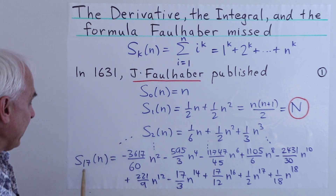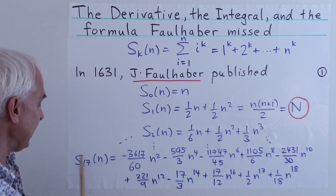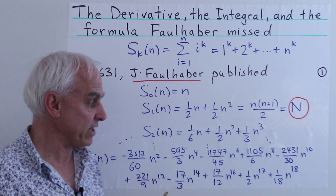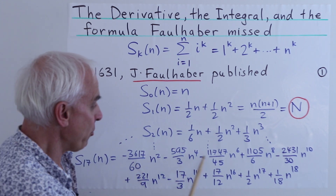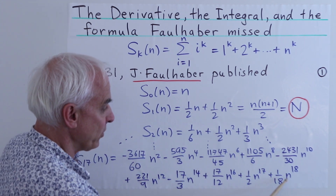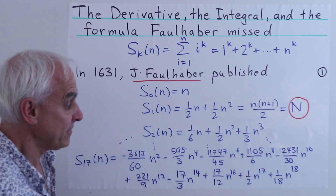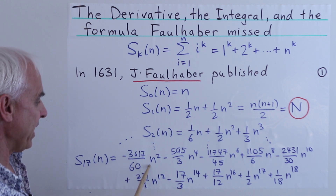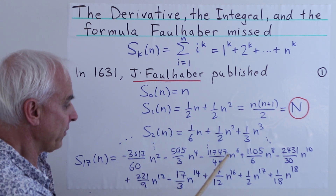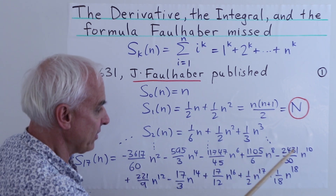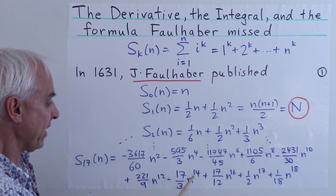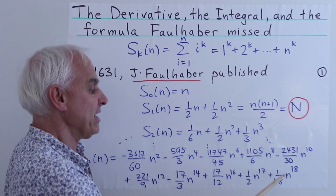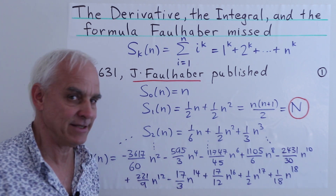The last one that Faulhaber explicitly wrote down is S_17(n), a polynomial of degree 18 in n, starting with n, n-squared, n to the fourth, n to the sixth, n to the eighth, n to the tenth, n to the twelfth, n to the fourteenth, n to the sixteenth, and then n to the seventeenth and n to the eighteenth.